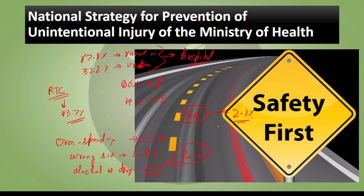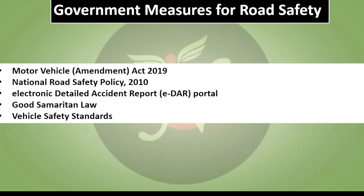Rural areas see approximately 45 deaths per 100 km of road. Government measures that have been taken include the Motor Vehicle Amendment Act, updated traffic regulations, increased provisions, and road safety measures such as mandatory helmet and seat belt requirements with increased penalties.